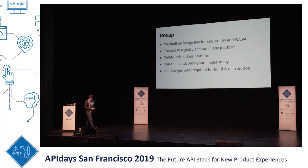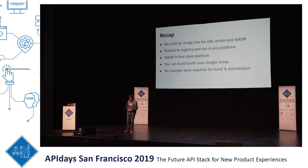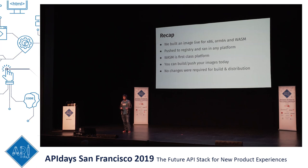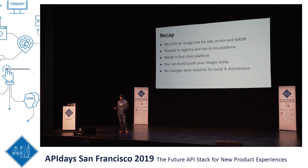A quick recap: we built an image for all three platforms — AMD64, ARM64, and WASM — pushed to the registry, and ran it on multiple platforms. The key point is that we did not change anything in Docker to support this build capability. Nothing changed in Docker build and BuildKit. All of this worked out of the box. You can basically build and push whatever images, even WASM images today, with the Docker infrastructure and Docker registries. No changes were required.